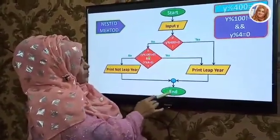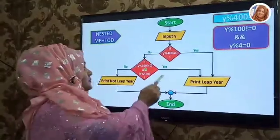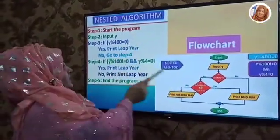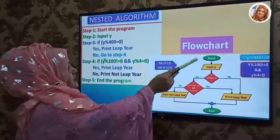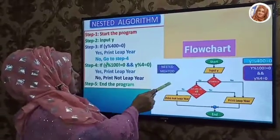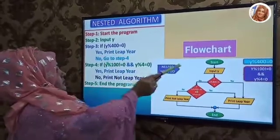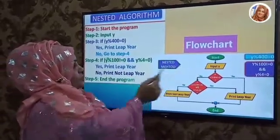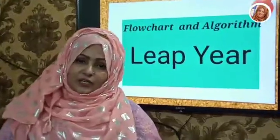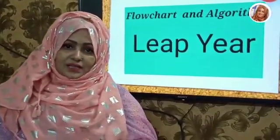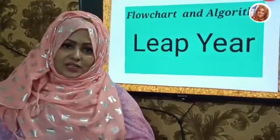And this is the oval shape for end. My dear student, this is the nested algorithm and this is the nested flowchart — both are equal. Here you see the algorithm and here the flowchart. I hope you understood my lecture. See you next class. Stay home, stay safe.